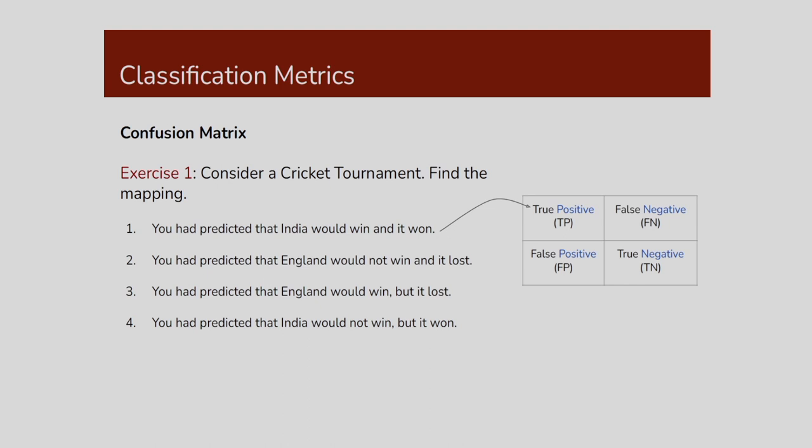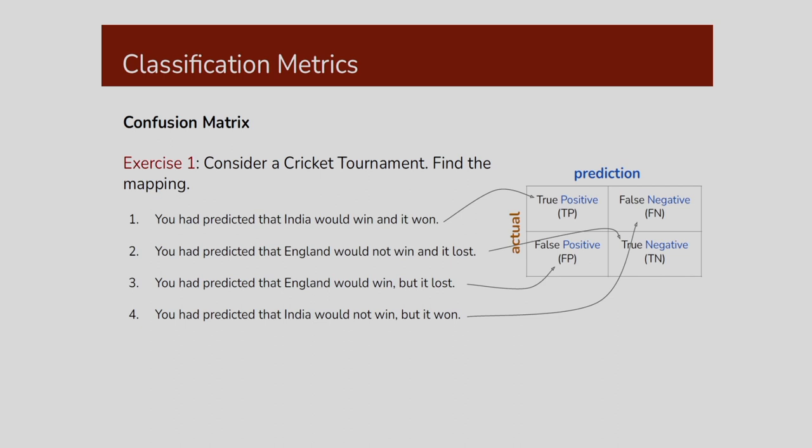Consider a cricket tournament to show the mapping in the confusion matrix. You predicted that India would win and it won — that means it is the true positive. You predicted that England would not win and it lost — that corresponds to true negative. You predicted that India would not win but it won — that is the false negative. So all these parameters — true positive, false negative, false positive, true negative — all this you can determine from the confusion matrix.